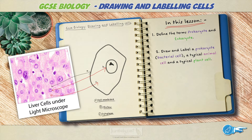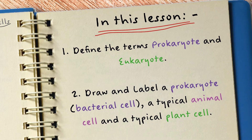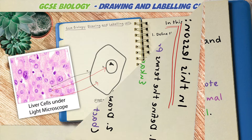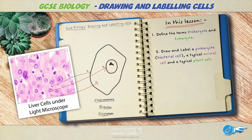Firstly you should know two key terms: prokaryote and eukaryote. We'll compare these cells in another lesson, but for now let's get to grips with what those words actually mean.